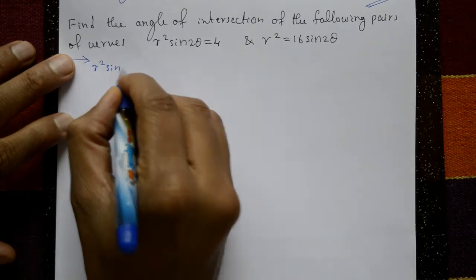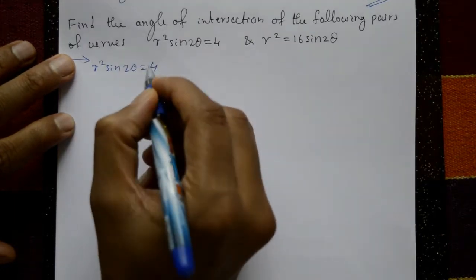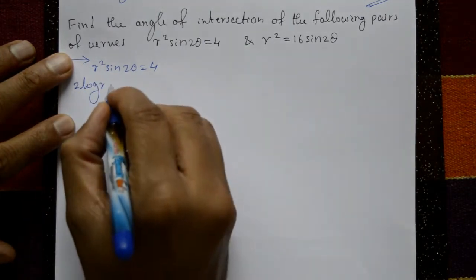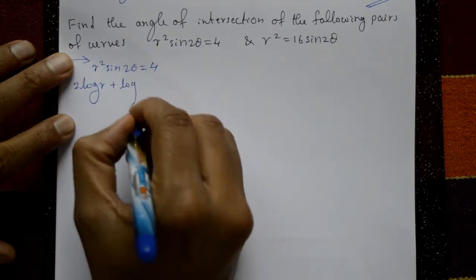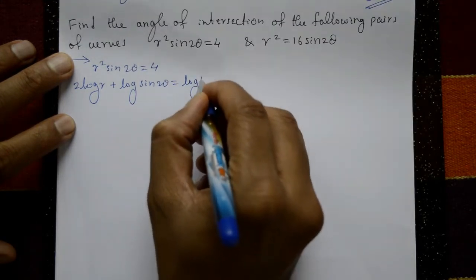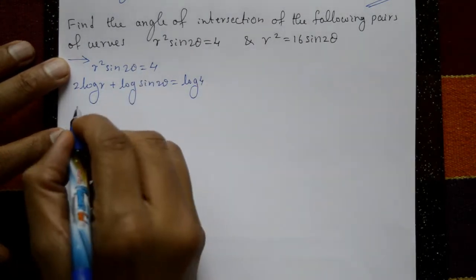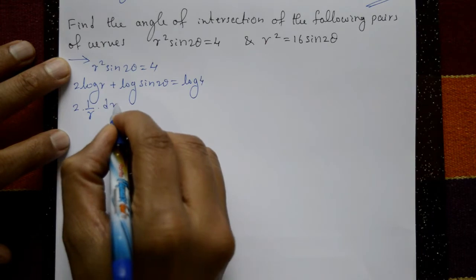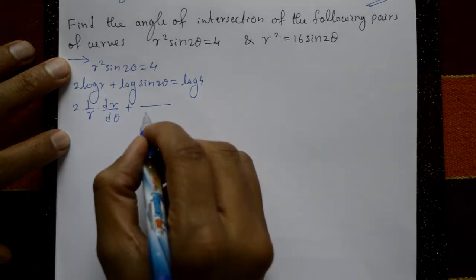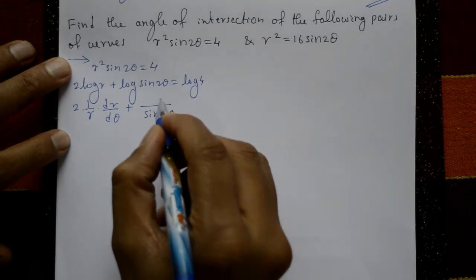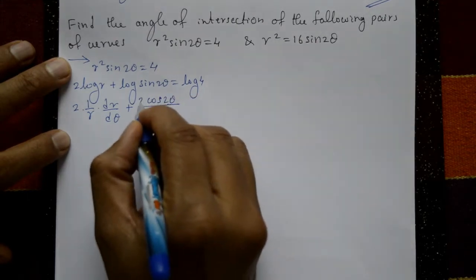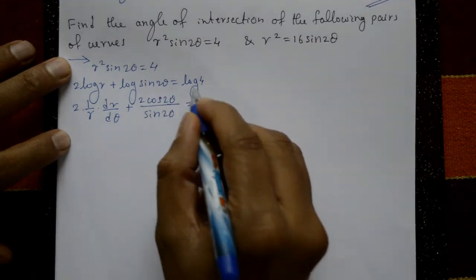First curve: R² sin2θ = 4. Taking log on both sides: 2logR + log(sin2θ) = log4. Now differentiate with respect to θ: 2·(1/R)·(dR/dθ) + (1/sin2θ)·cos2θ·2 = 0, since log4 differentiates to 0.